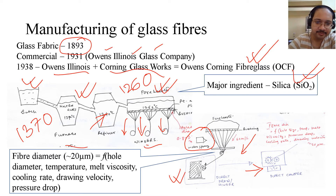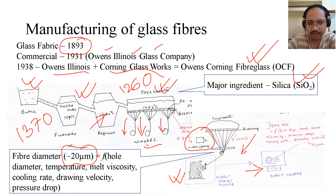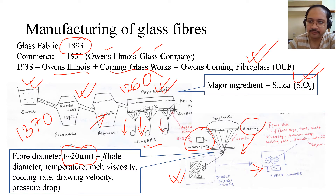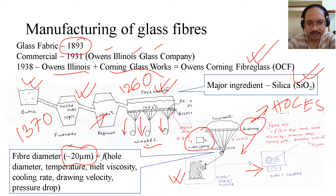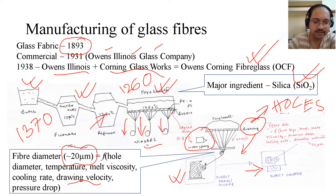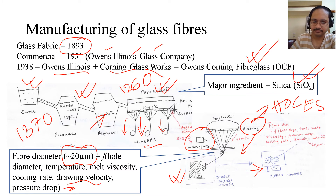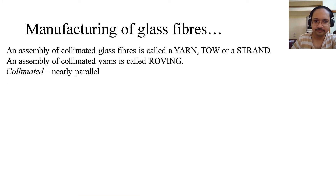The fiber diameter is typically 20 microns in size and is a function of the hole diameter of the bushing — as you can see, the bushing has holes. It is also a function of the temperature, melt viscosity, cooling rate, drawing velocity, and pressure drop. There are a number of parameters on which the fiber diameter depends.